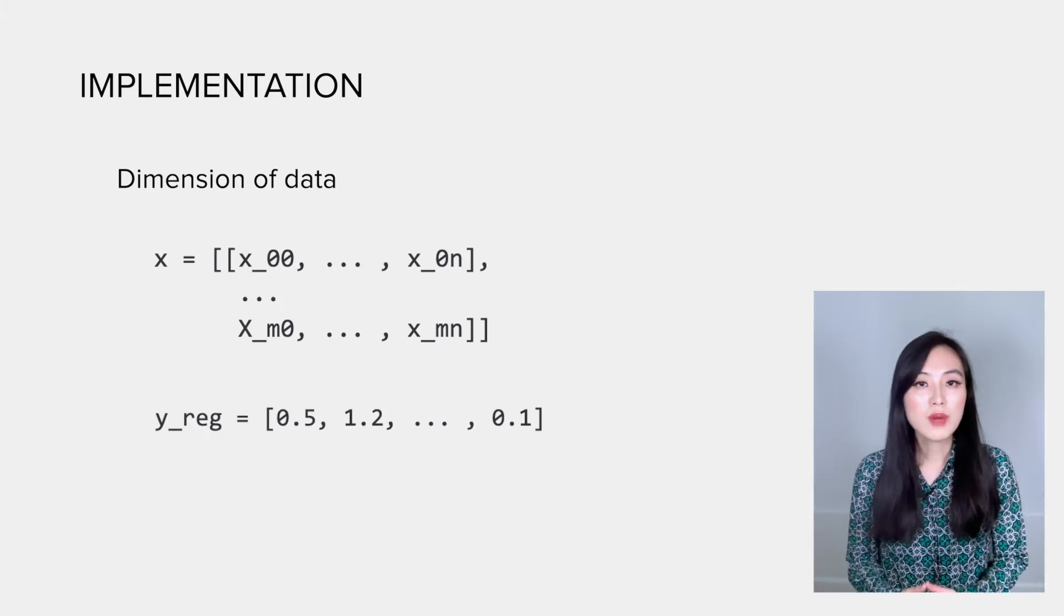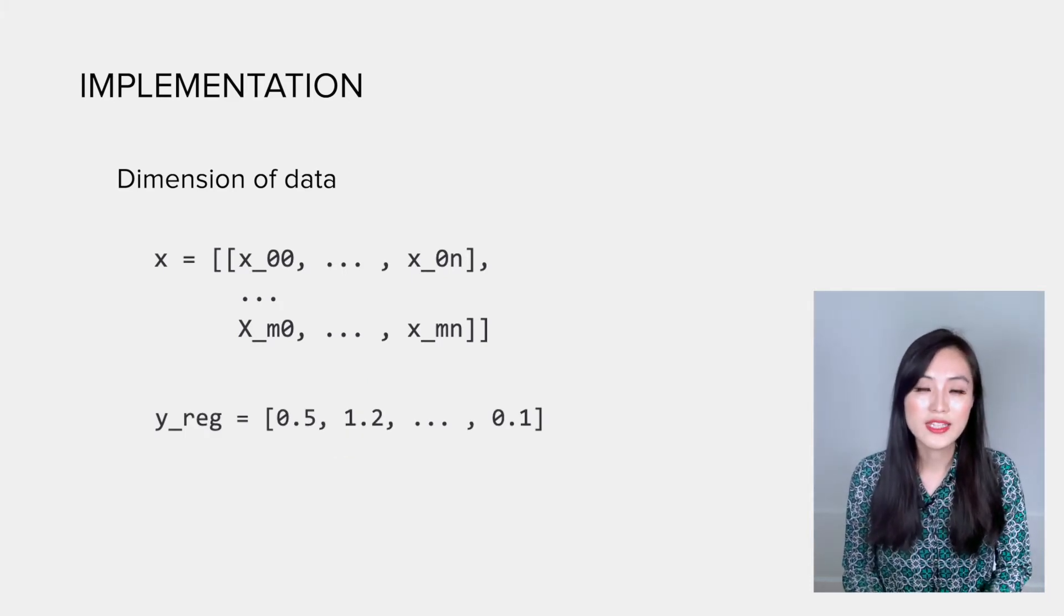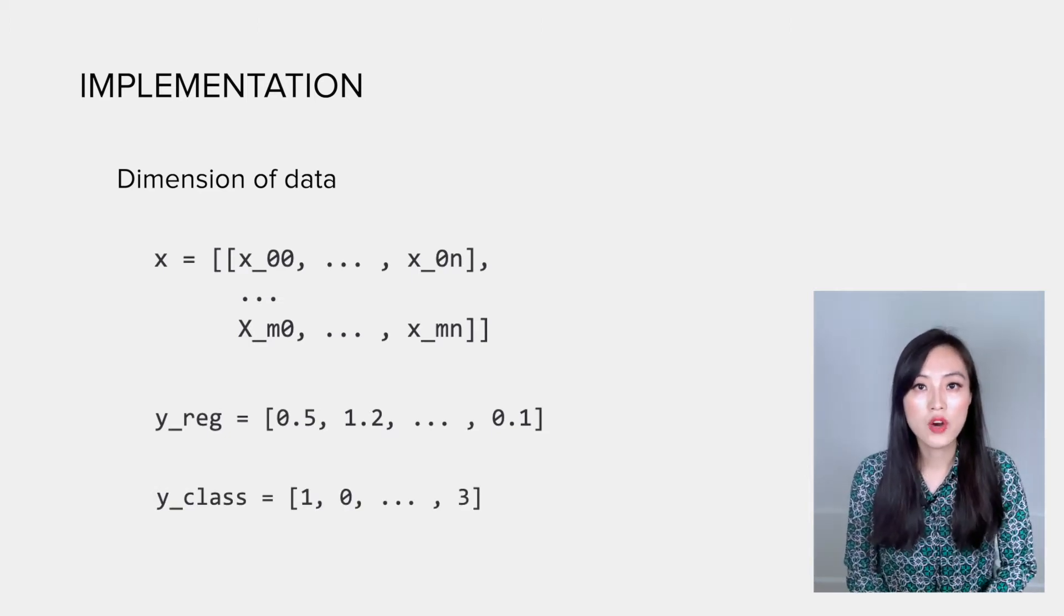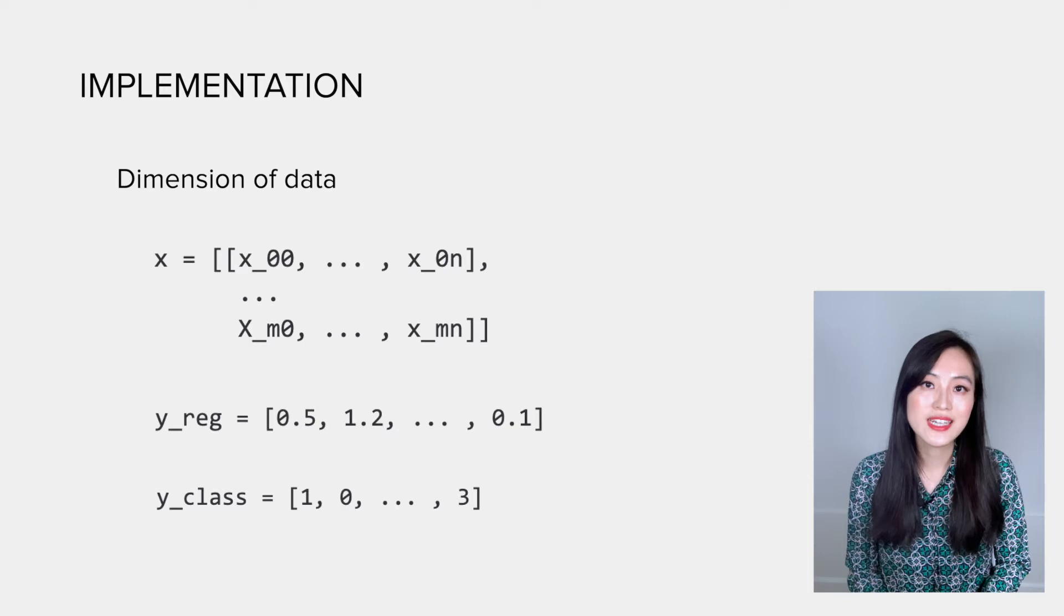For regression problems, the labels y is an array of floating numbers, and for classification problems it's an array of integers, each represents a class.